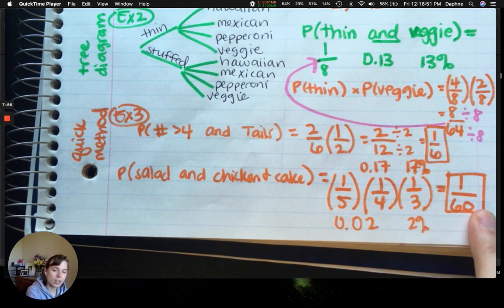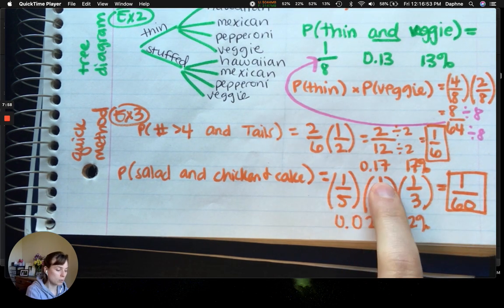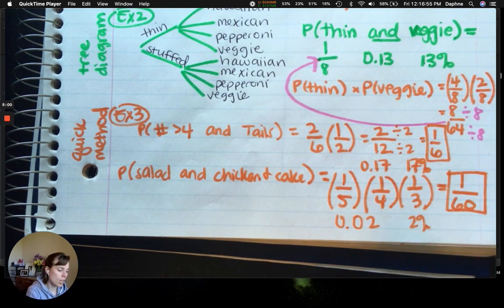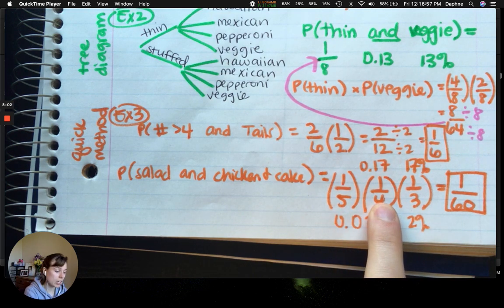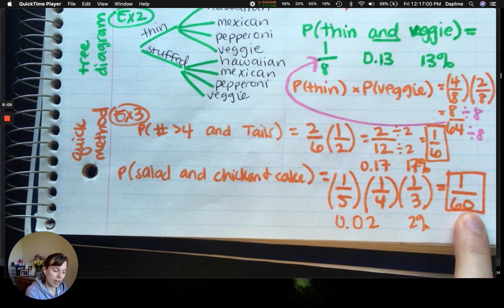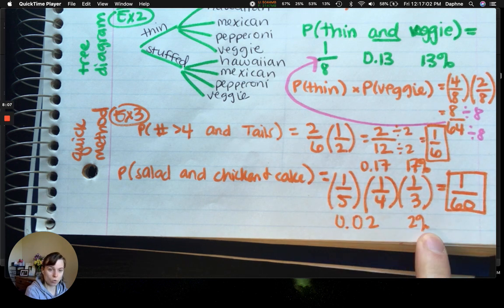So, in this case, I have 3 events that I want to happen. I'm going to multiply all of their numbers together. 1 times 1 times 1. 1. 5 times 4 is 20. Times another 3 will get me 60. And then when you divide this, you'll get 2 hundredths or 2%.